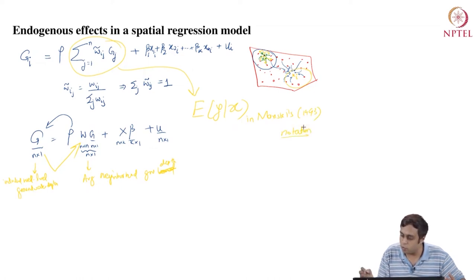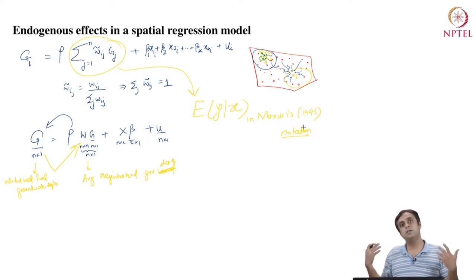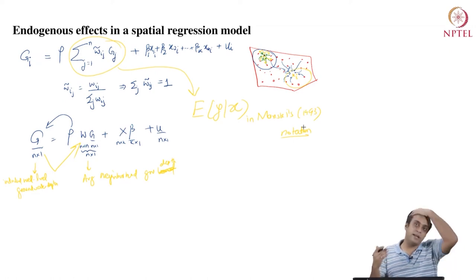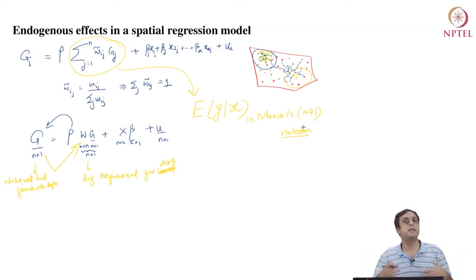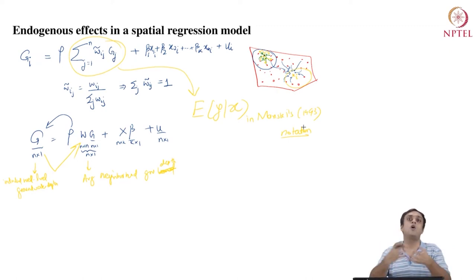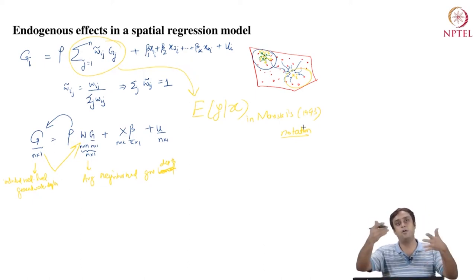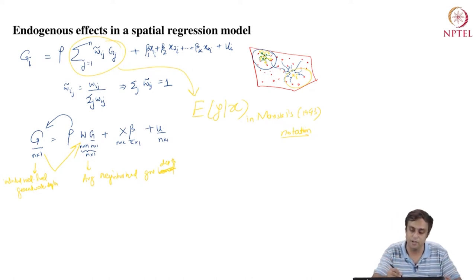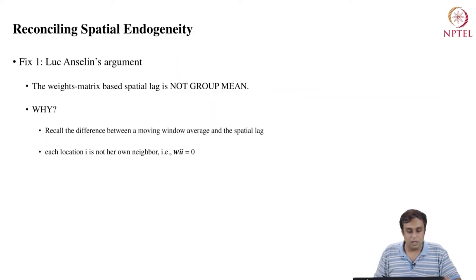So what we are looking at here is an endogenous social effects problem playing out in spatial regression models. It's quite parallel. One can therefore use Manski's framework. Manski provides constraints for parameters and conditions for finding instruments in order to ensure that one can infer the effect of the neighborhood scale of outcome onto the individual outcome at every location in a spatial data set.